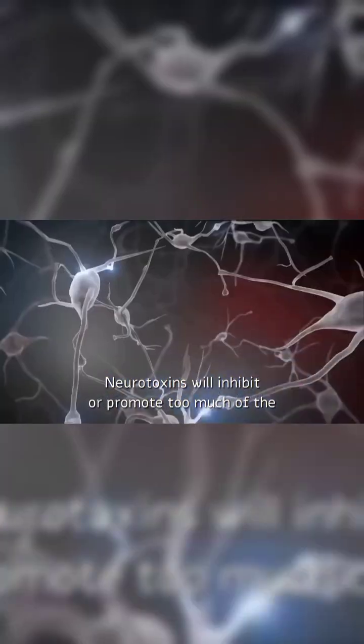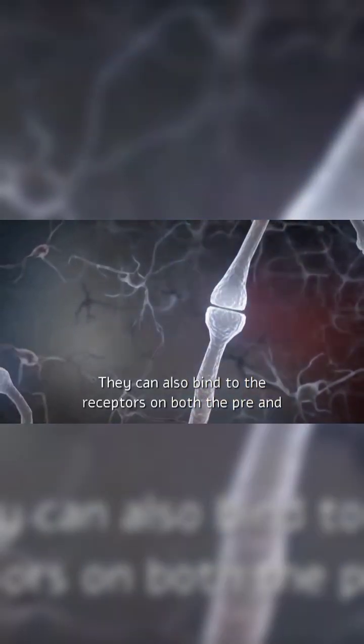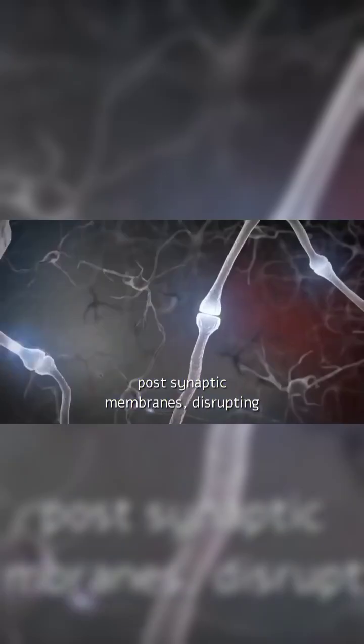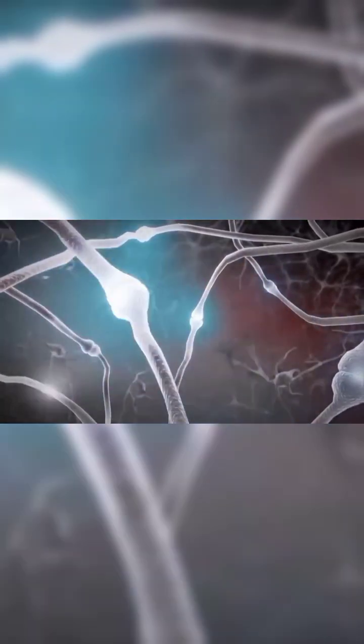Neurotoxins will inhibit or promote too much of the release of neurotransmitters. They can also bind to the receptors on both the pre- and post-synaptic membranes, disrupting communication from cell to cell, or even the neuron's ability to fire.